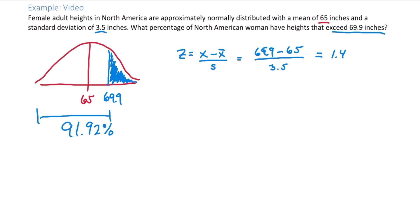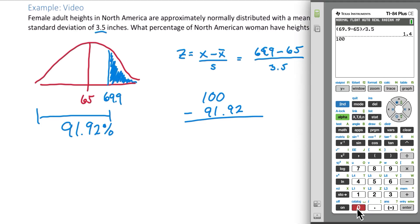But we're not interested in the percent to the left of our z-score. We're interested in the percent to the right. So we simply need to remember that the total percentage is 100. So if we subtract the percent to the left, 91.92, we'll get what we're looking for. 100 minus 91.92 gives us 8.08 percent.